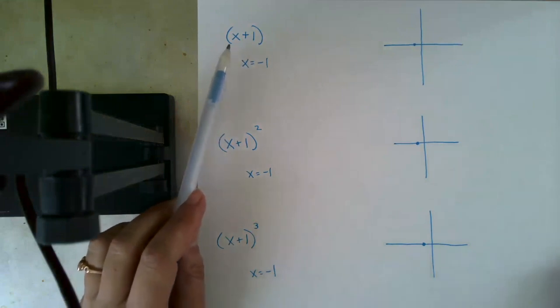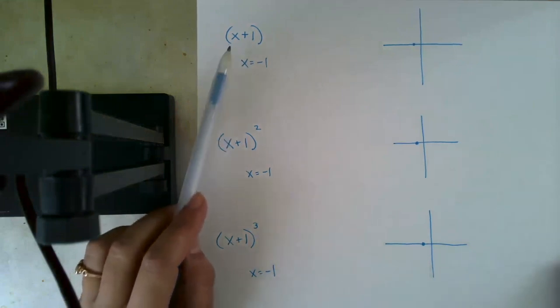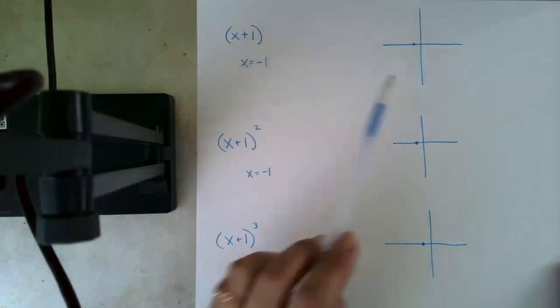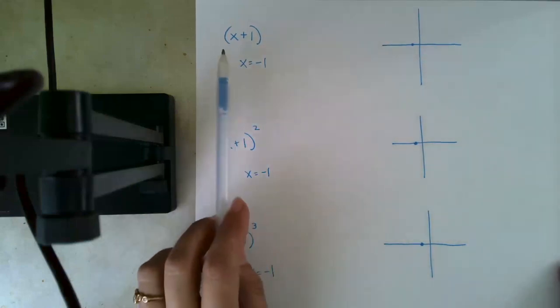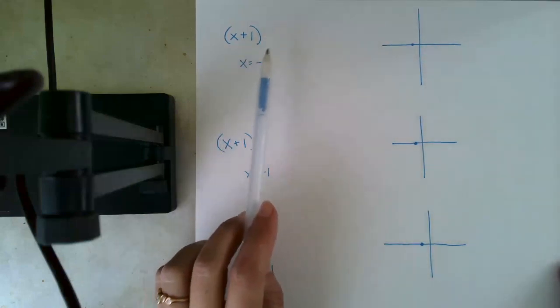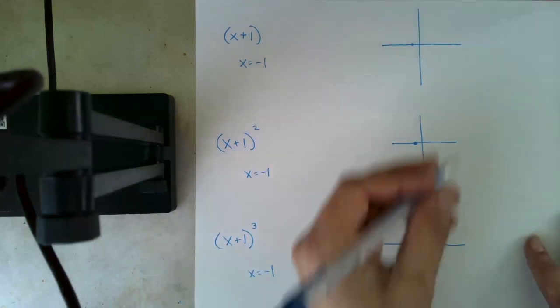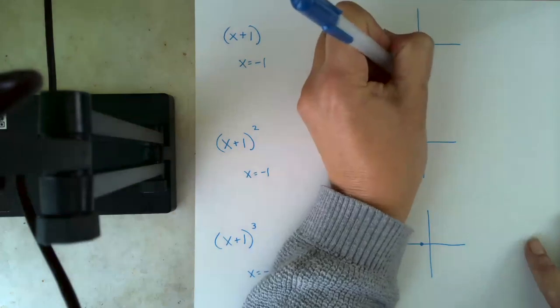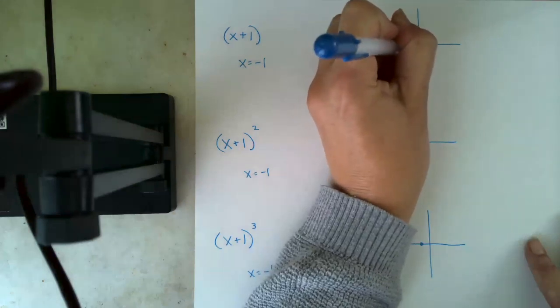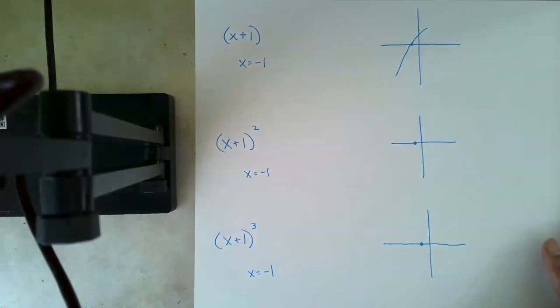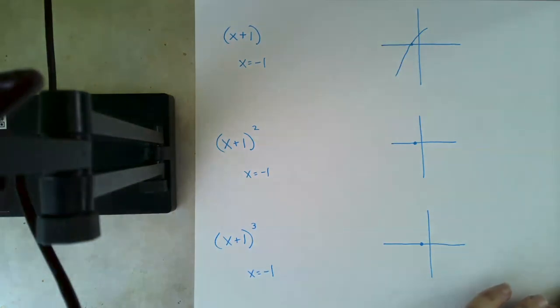And so at a multiplicity of one, when (x+1) is our factor, then x equals negative one is our zero. And we can expect that we will pass through this point and continue in sort of the same trajectory we were on before.